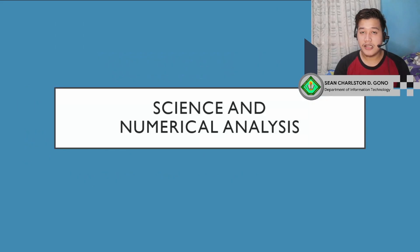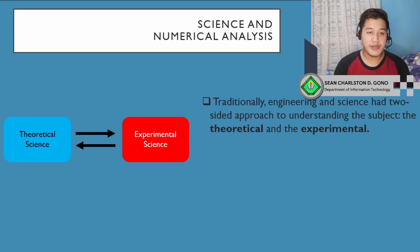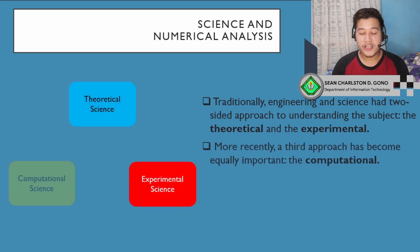Let's talk about science and numerical analysis. How does science affect numerical analysis and vice versa? Traditionally, engineering and science had a two-sided approach to understanding the subject: the theoretical and experimental. When you have a theory, for example, you theorize that the apple will fall at this speed. If you have that theory, go ahead to experimental, where you experiment whether your assumptions or theory is correct. That is our traditional approach. But most recently, a third approach has become equally important: the computational.